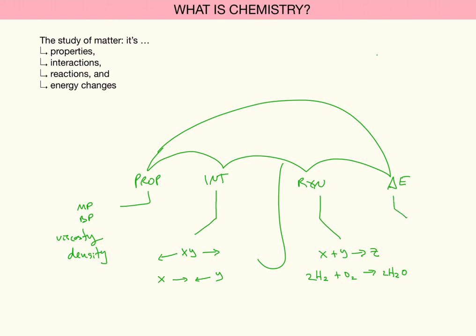Almost any interaction or reaction is going to be associated with an energy change, shown here abbreviated as delta E. In some interactions or reactions, heat is given off — you'll learn that's called exothermic. While in others, heat may actually be taken up. At a campfire, heat is given off from the combustion of the cellulose. When you have a cold pack, heat is actually absorbed, and that's why your skin feels colder.